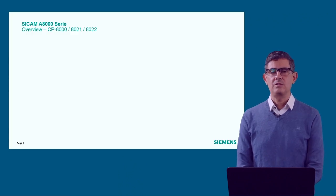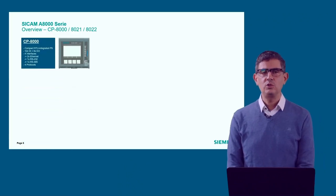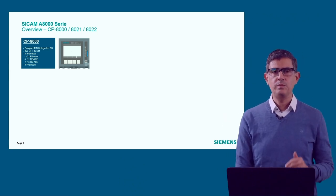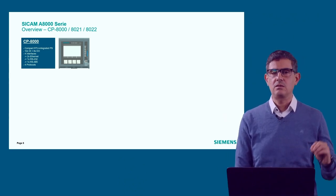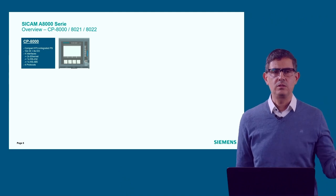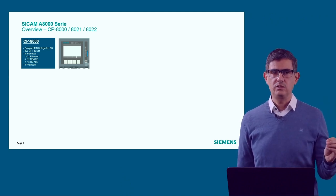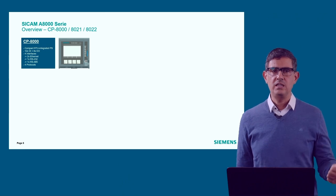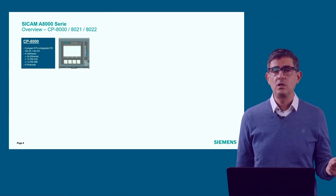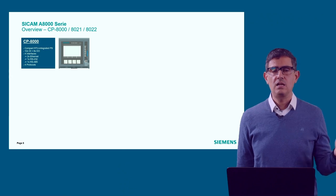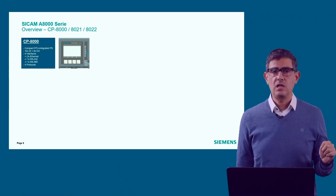All the SICAM 8000 family started with this small RTU you can see on the screen, the CP8000. This is a compact RTU which is fully equipped already. It has one 24-volt power supply included, one module with binary inputs, one module with binary output, four interfaces — two of them LAN ports (Ethernet) and two serial ports. It supports four communication protocols and up to 20,000 data points.